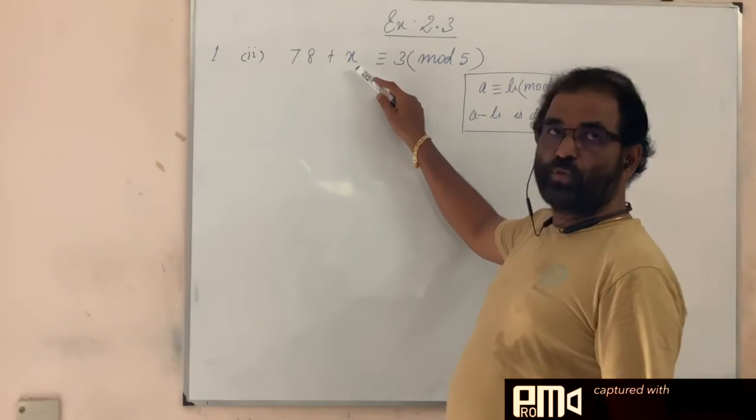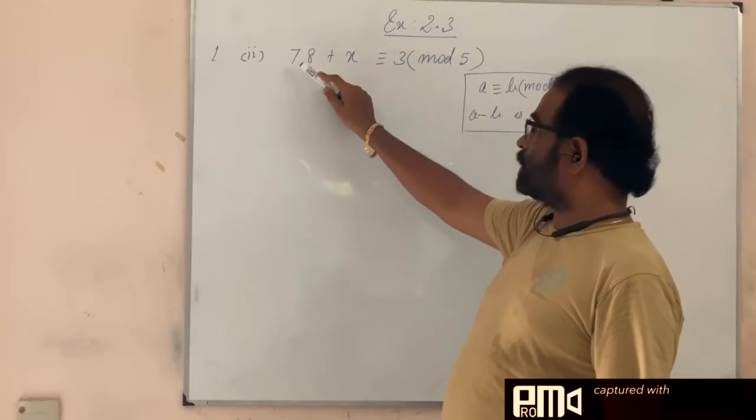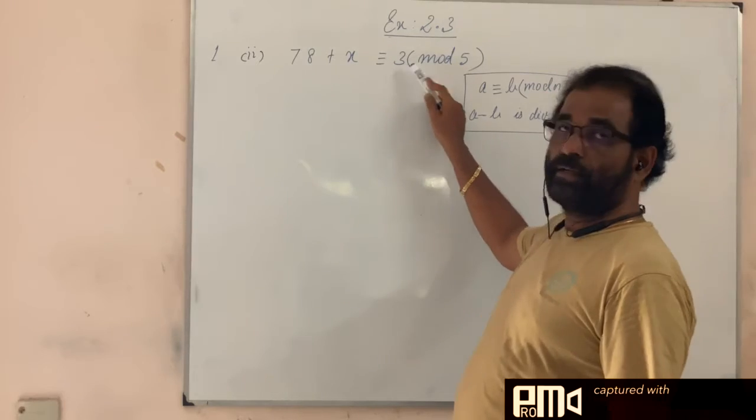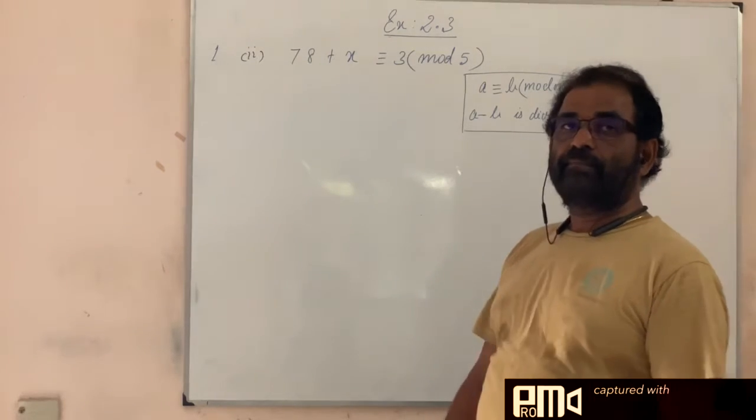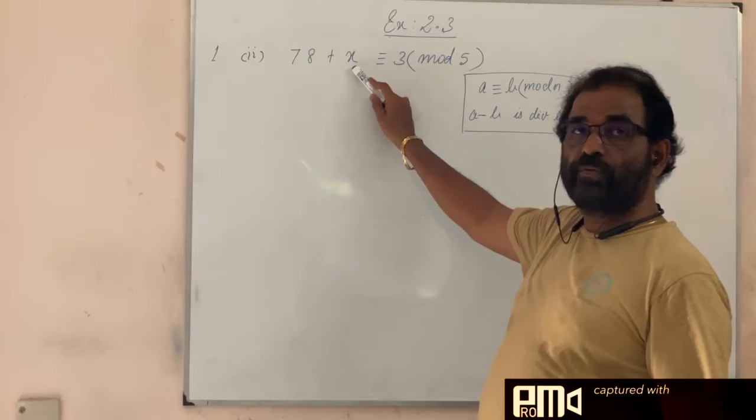Find the least positive value of x such that 78 + x is congruent to 3 mod 5. You have to find out the least positive value of x.